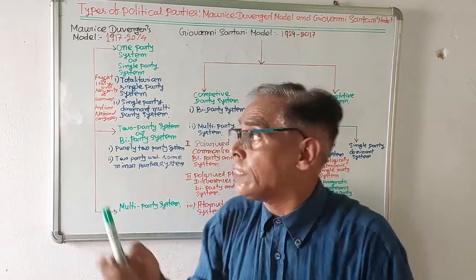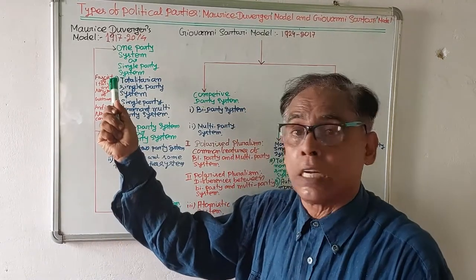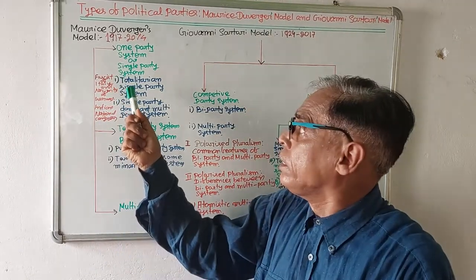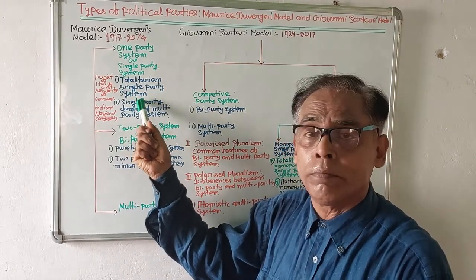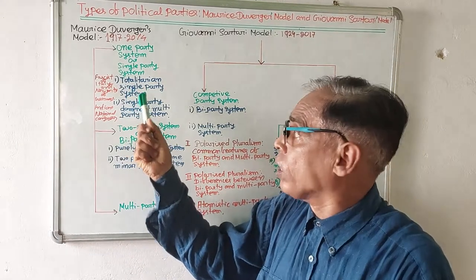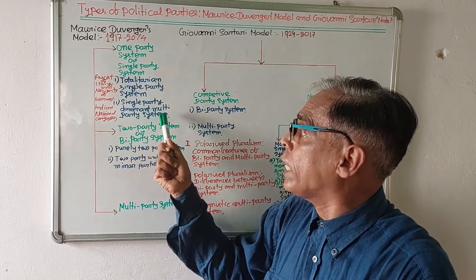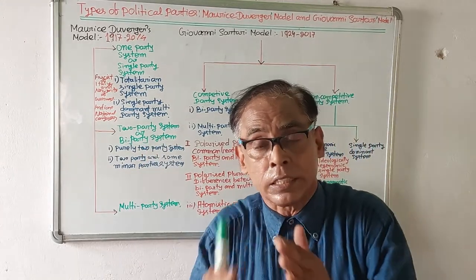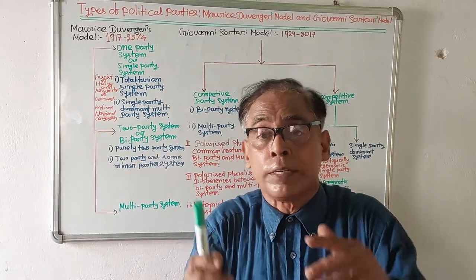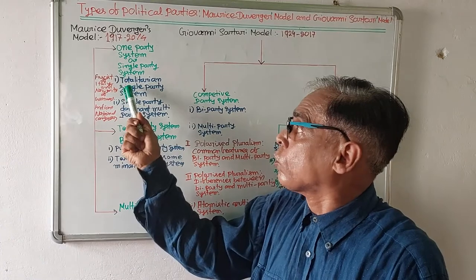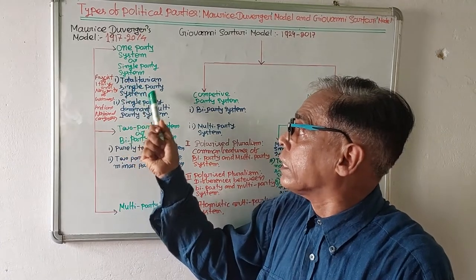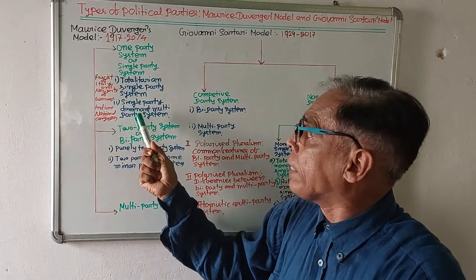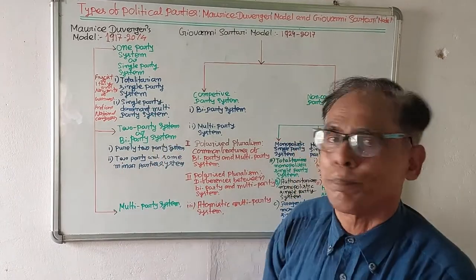Duverger has categorized the one party system into two categories: one is the totalitarian single party system, and the other is the single party dominant multiple system.